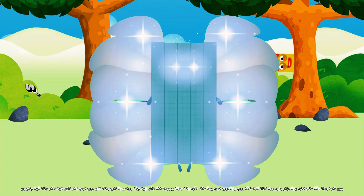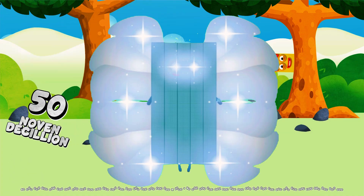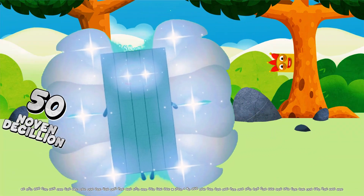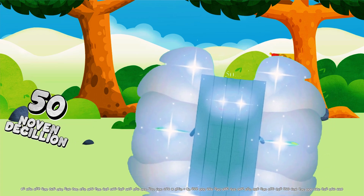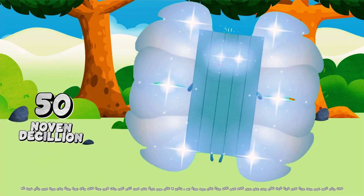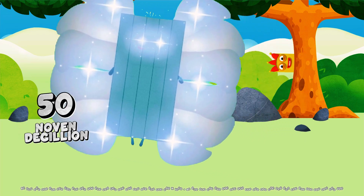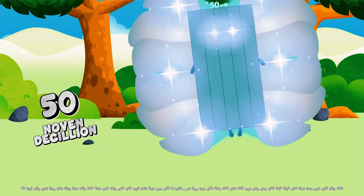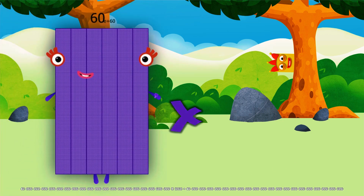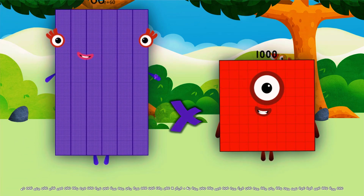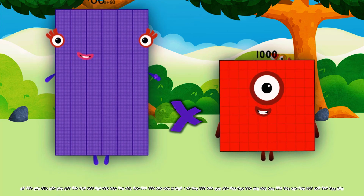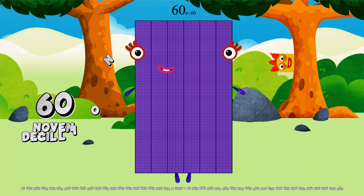Equals 50 novendecillion. 60 octadecillion multiplied by 1,000 equals 60 novendecillion.